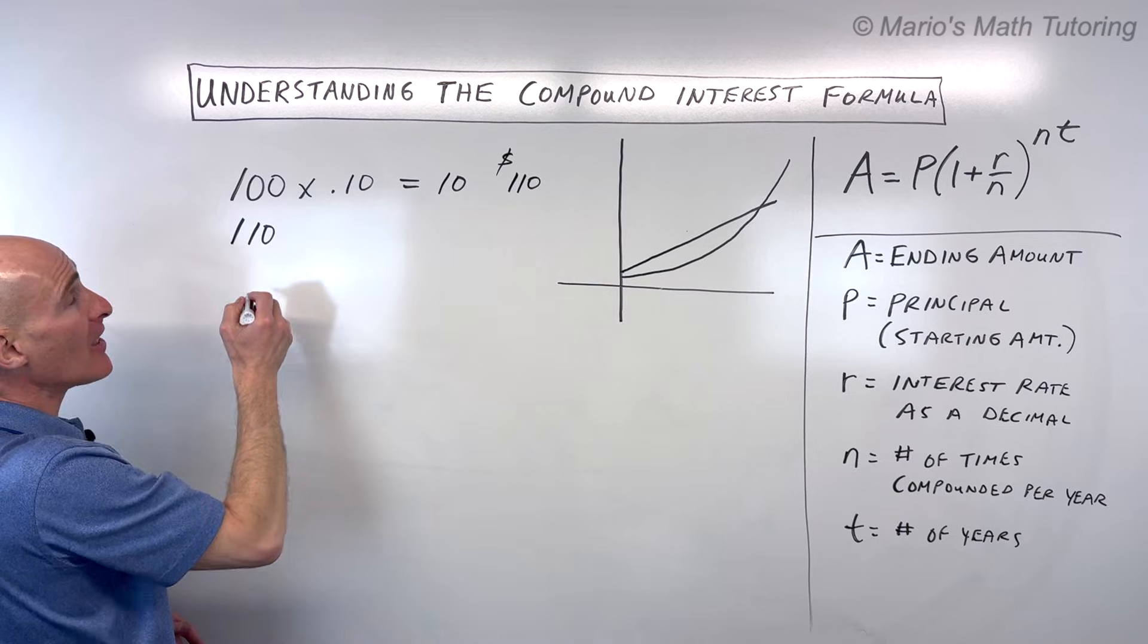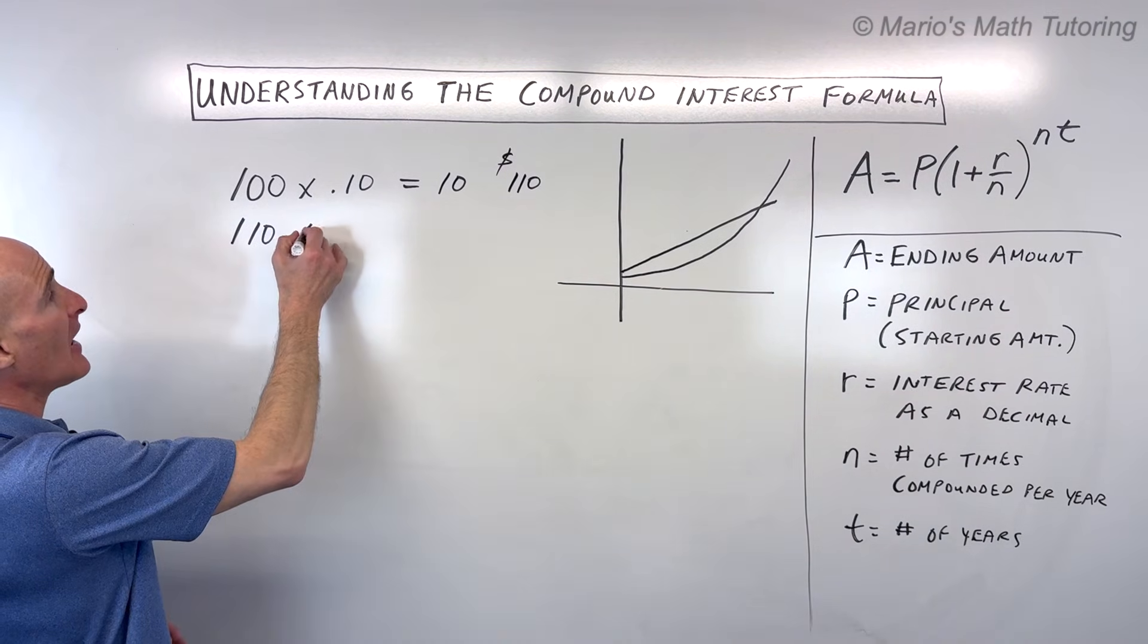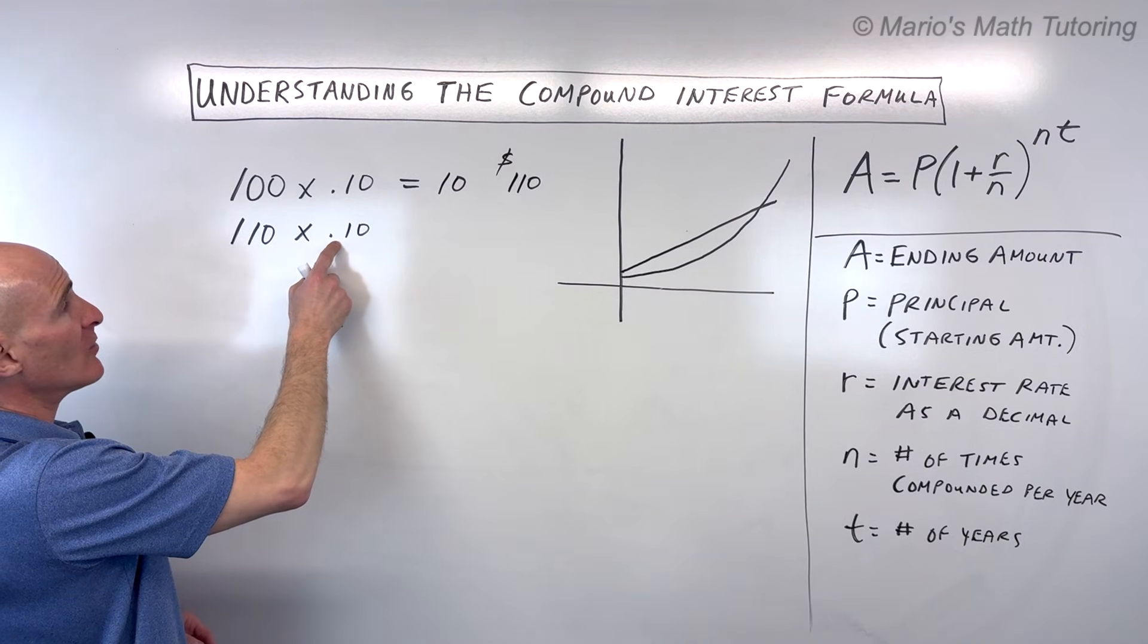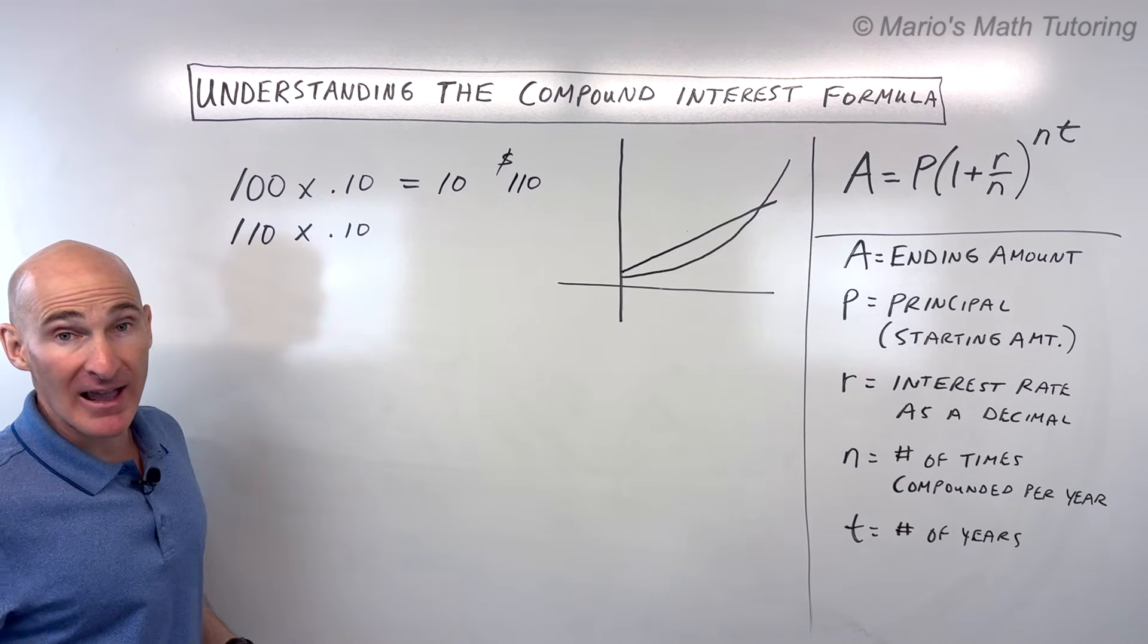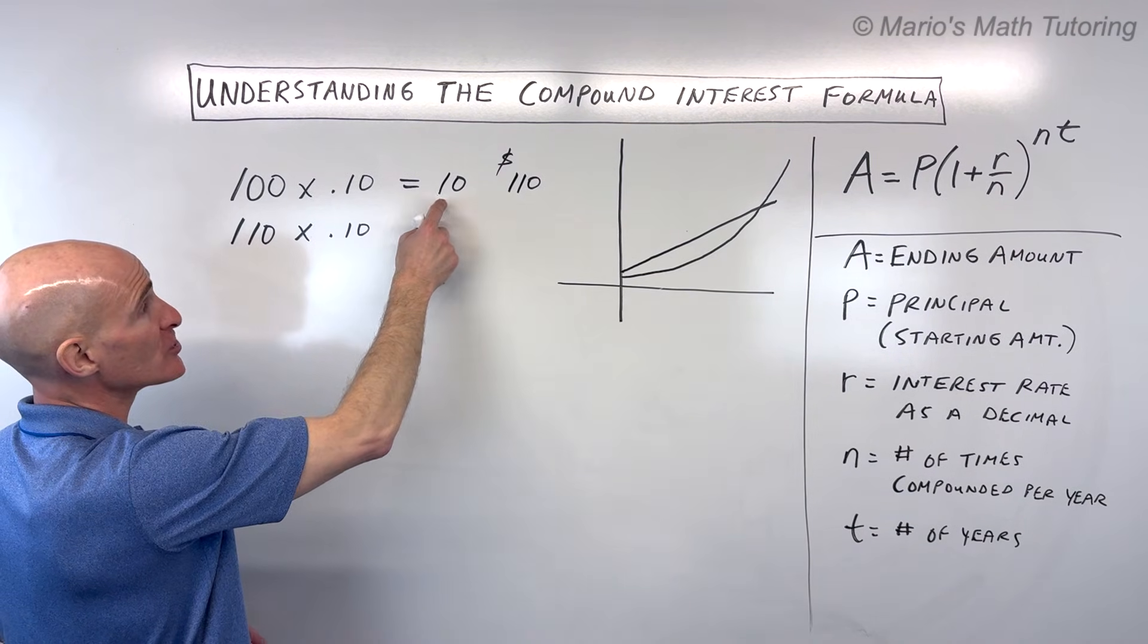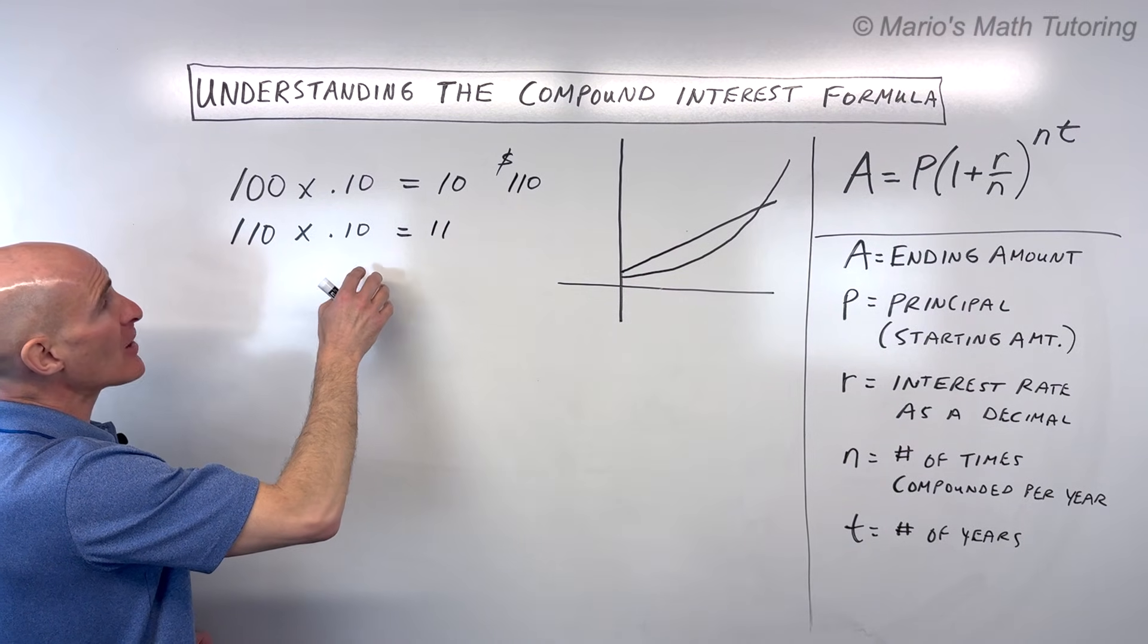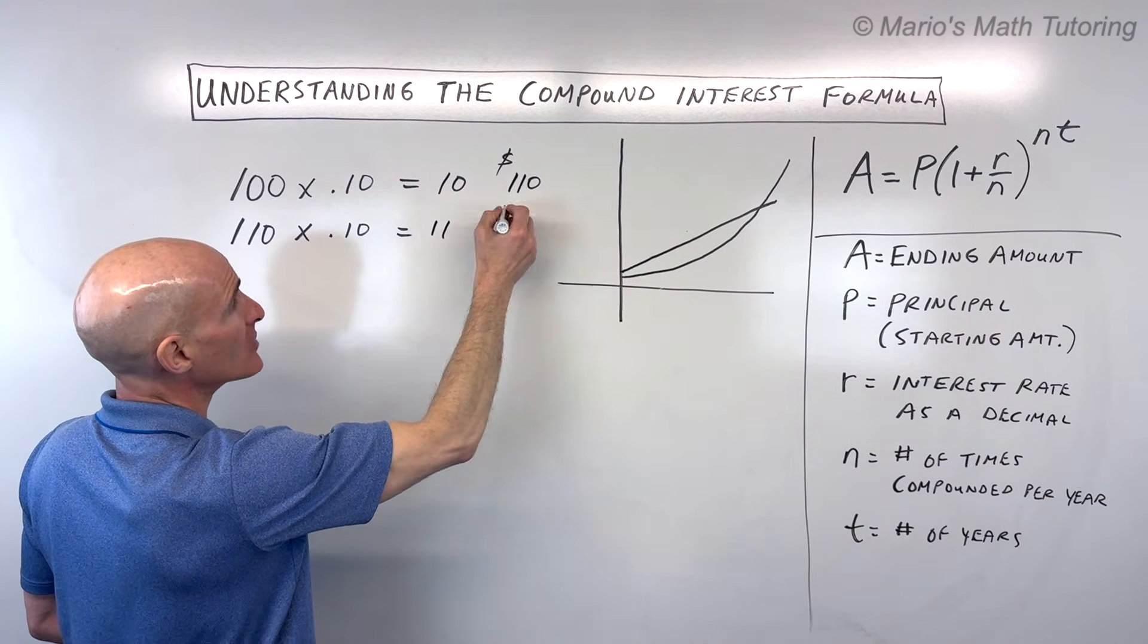You're going to take that $110 and you're going to compound it again. So the next year at 10%, now when you take 0.10 times 110, you're going to get $11. What happened there? First year you got $10. Now you're getting $11. We're going to take that $11, add it to what we had before which is $110. Now we have $121.